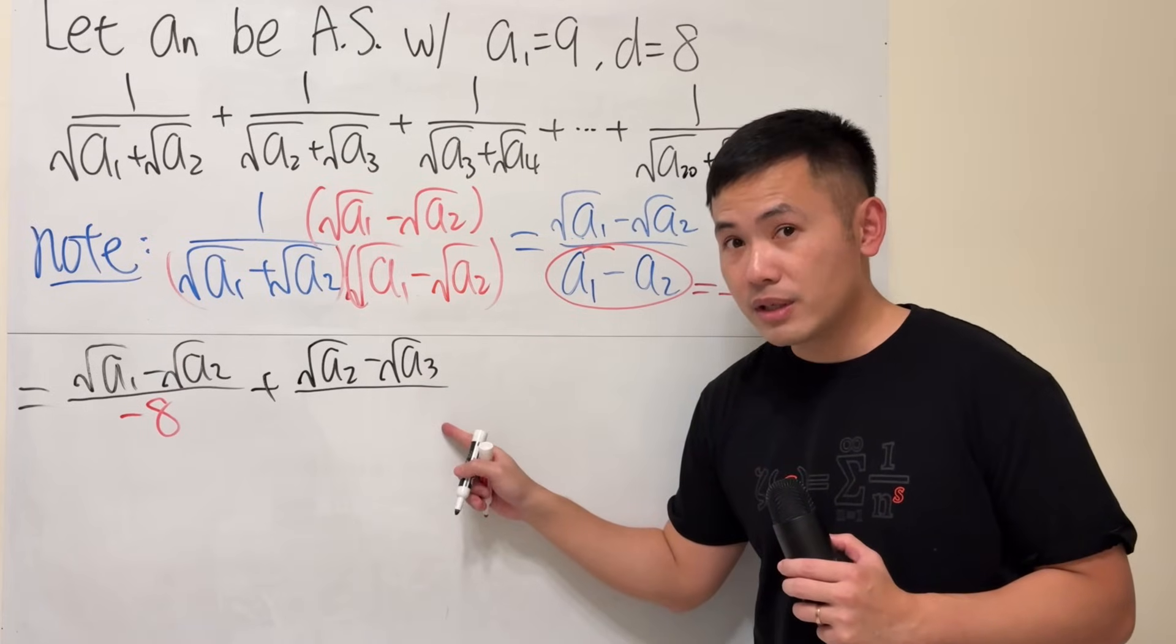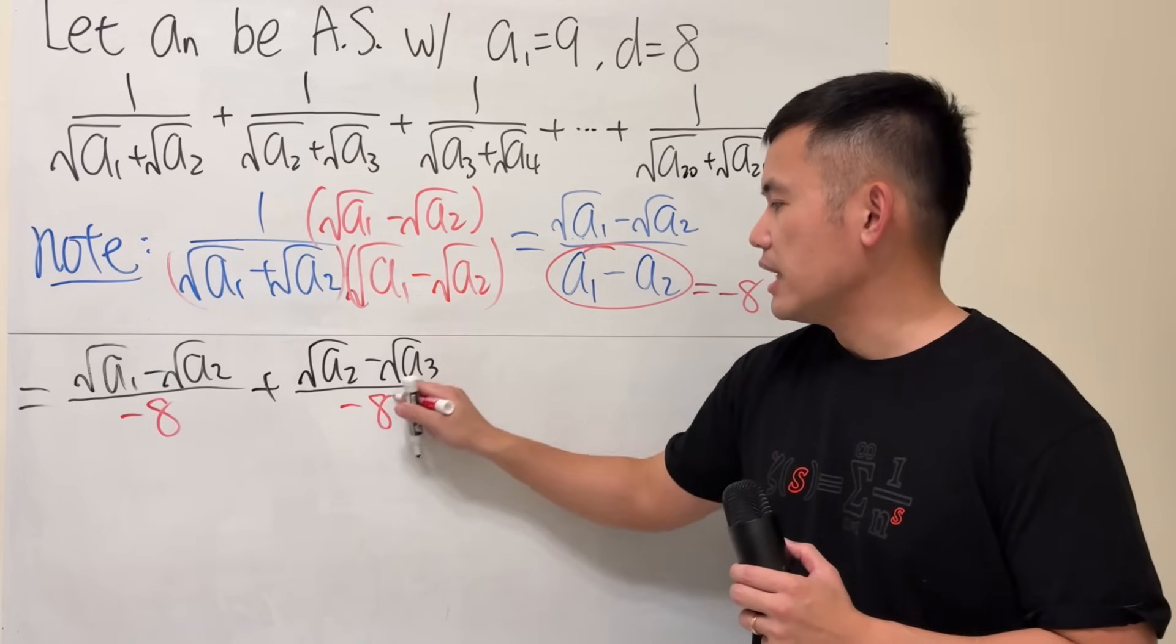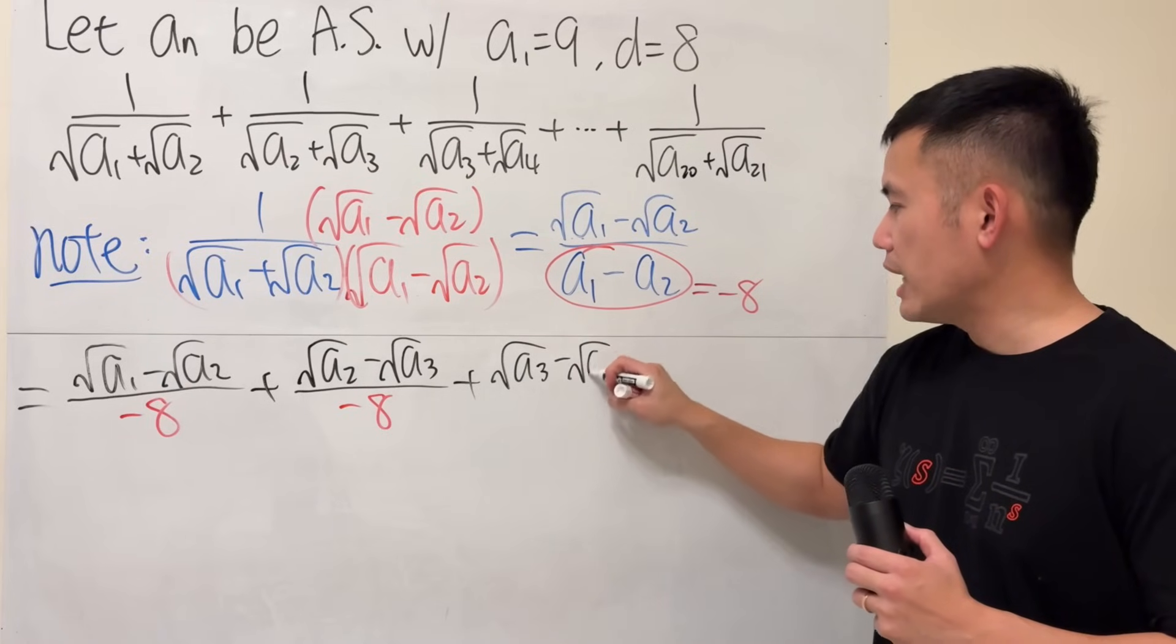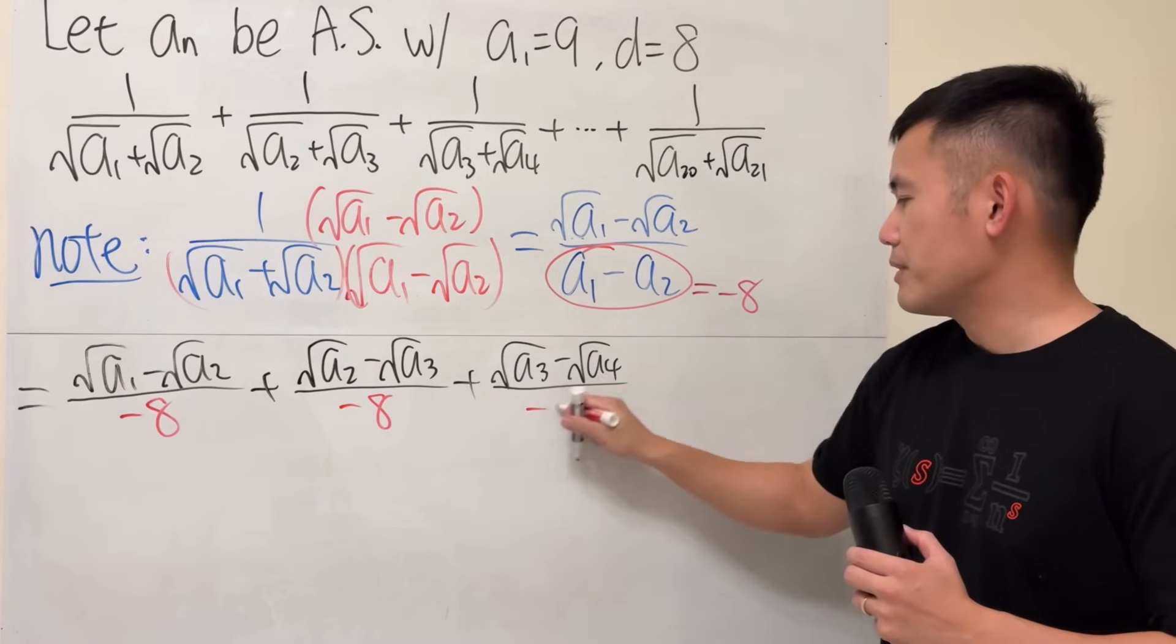Over a2 minus a3 on the bottom, but we know that's negative 8. And then continue the next one, square root of a3 minus square root of a4 over the same thing. This is very nice.